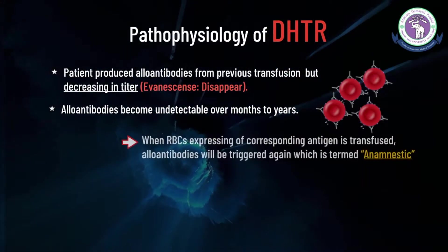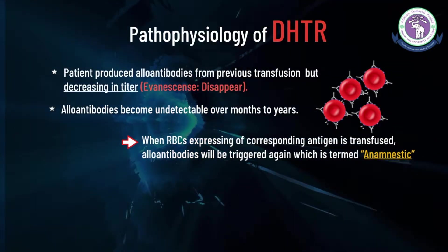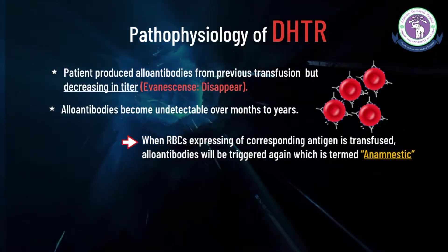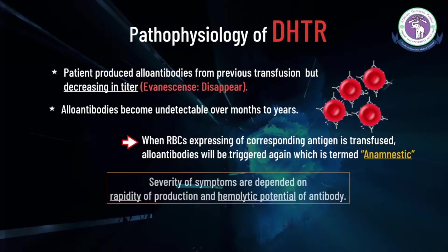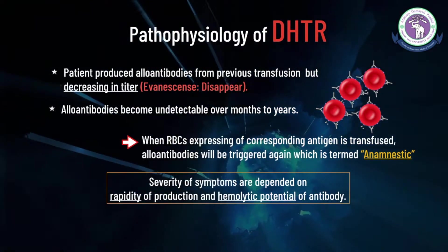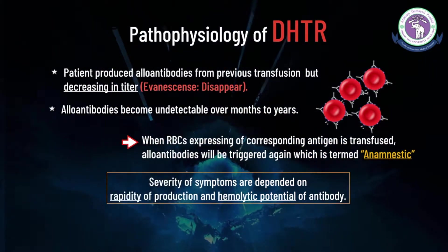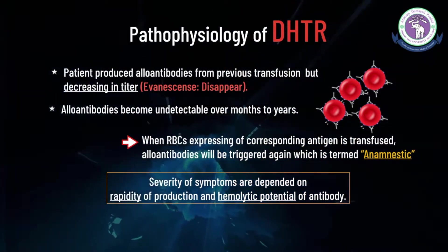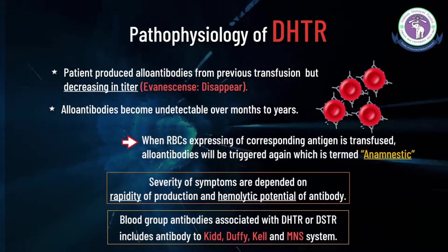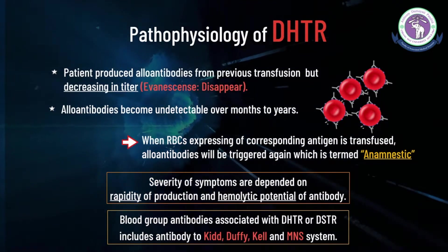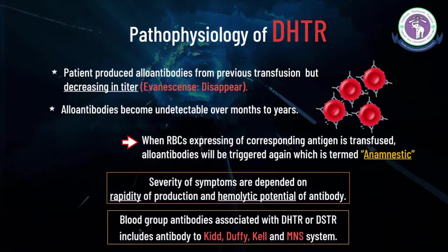When antigen-positive blood is transfused, an anamnestic response is triggered with antibody production occurring over the next several days to weeks after transfusion. Rapidity of antibody production together with hemolytic potential of the antibody are key factors in clinical presentations. Blood group antibodies associated with DHTR include antibodies to Kidd, Duffy, Kell, and MNS systems.